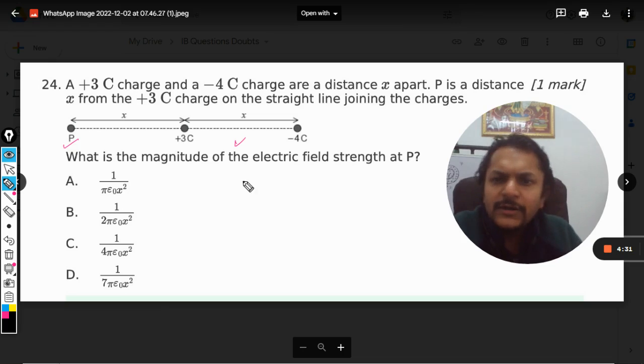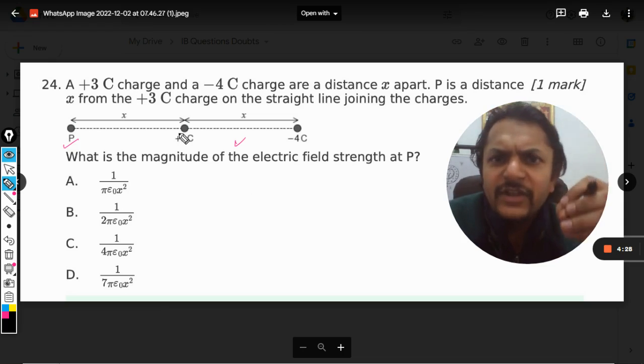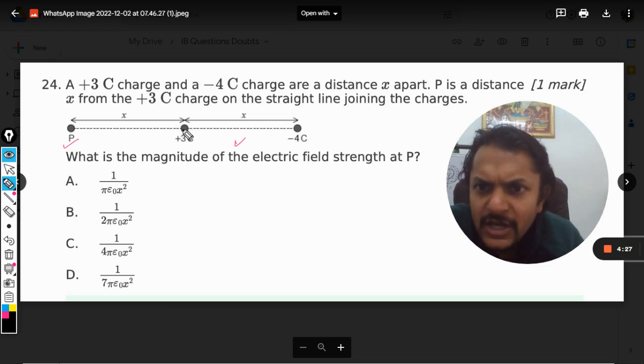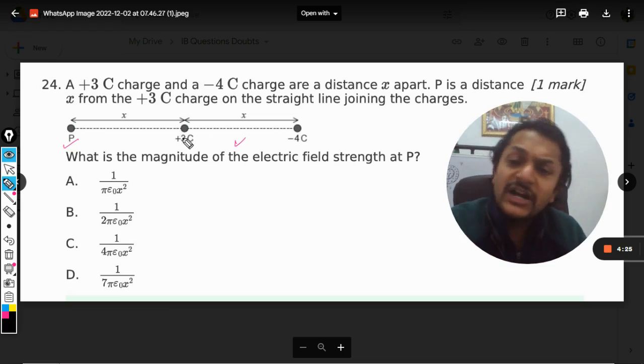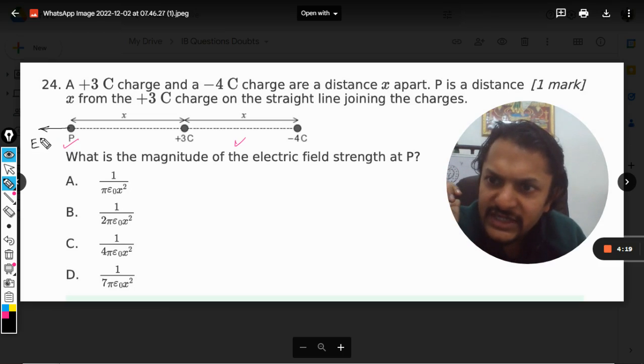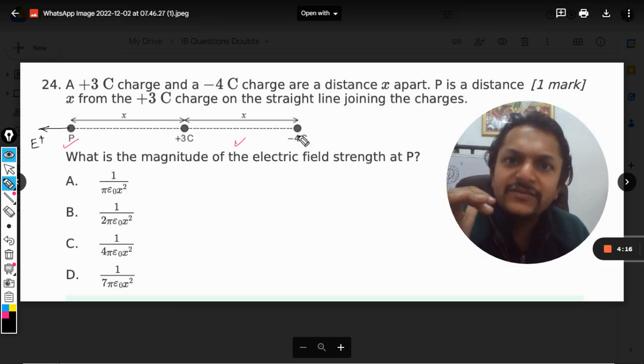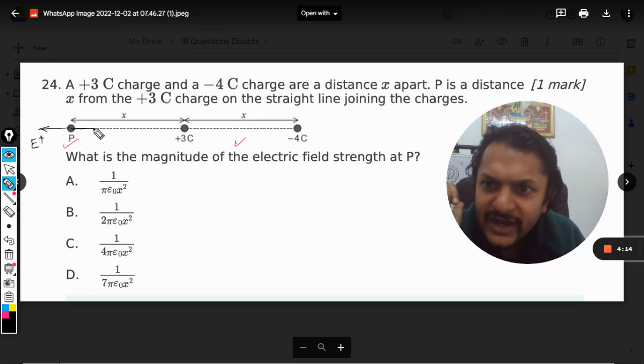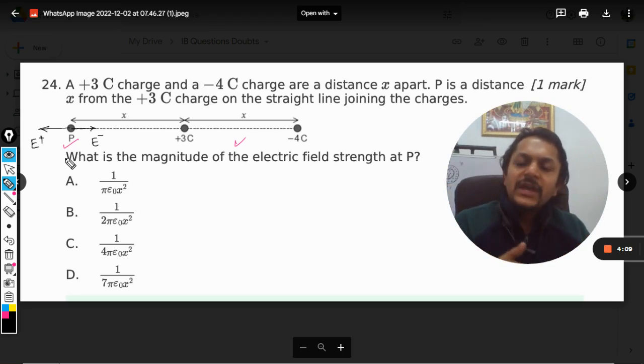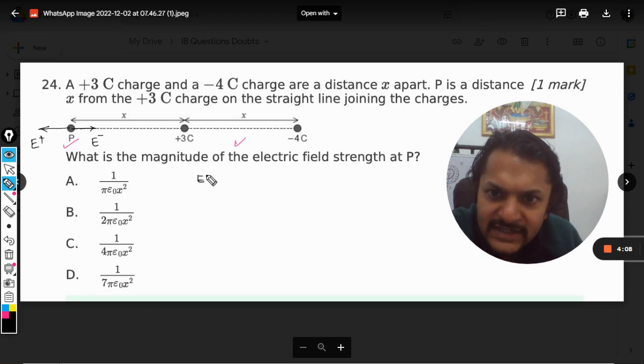The positive charge creates a positive electric field. Because of this positive charge, the electric field at this location will be away from the positive charge. I'll call it E_positive. This is a negative charge, so the negative charge will try to attract. This will be known as E_negative. First, let's find E_positive.